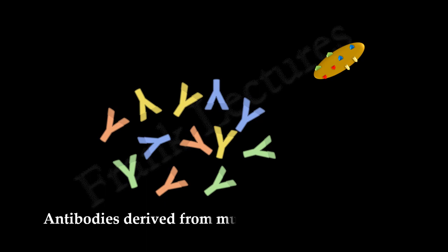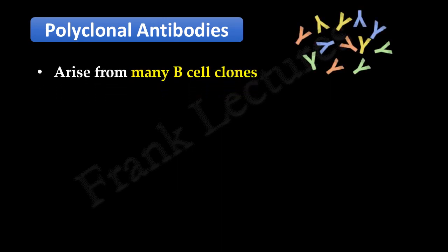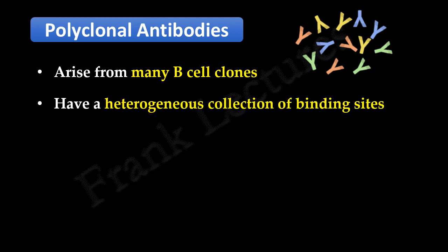As a result, for this antigen, our immune system produced four types of antibodies, each specific for a different epitope on the same antigen. Antibodies derived from multiple B-cell clones are known as polyclonal antibodies. Polyclonal antibodies are a heterogeneous mixture of antibodies, each recognizing a different epitope on the same antigen, and have a heterogeneous collection of binding sites.